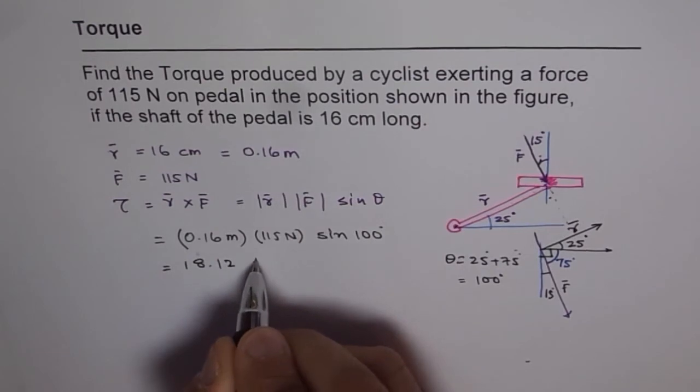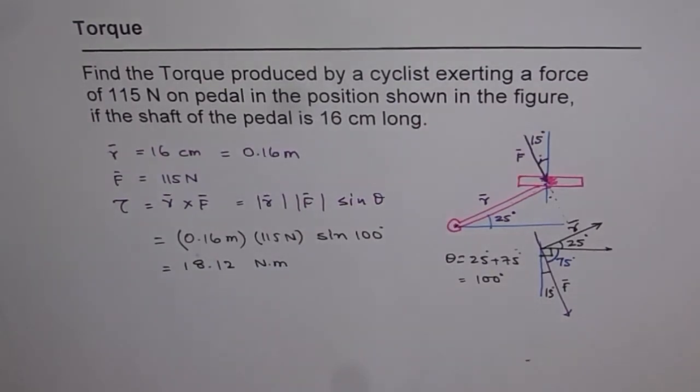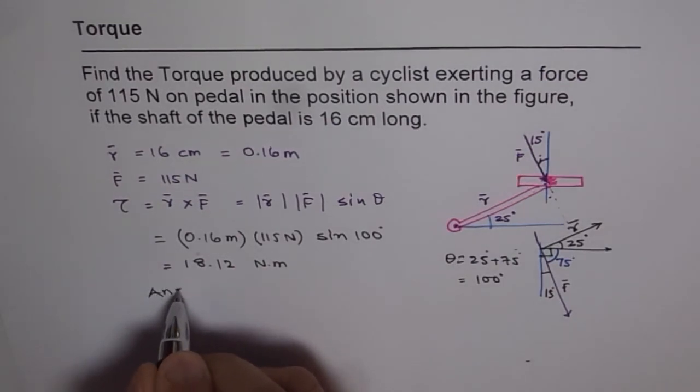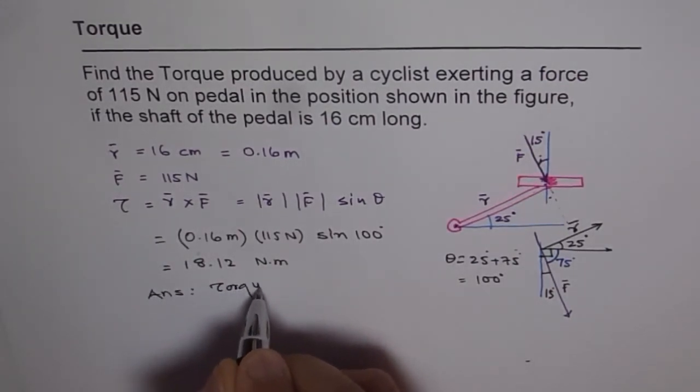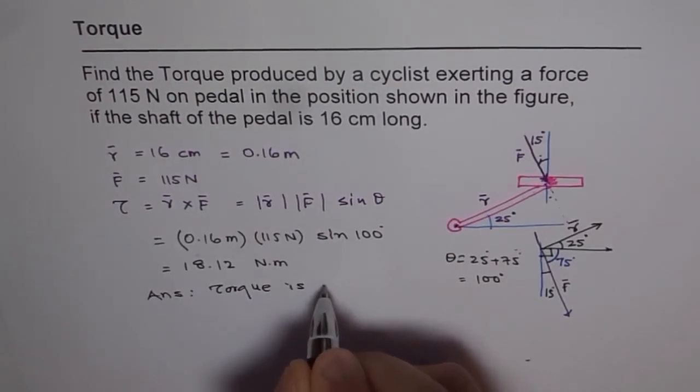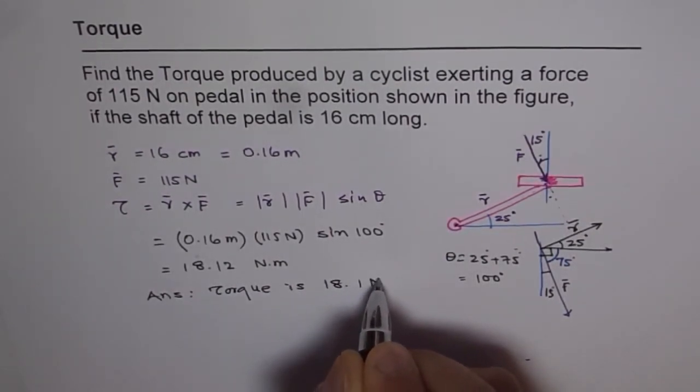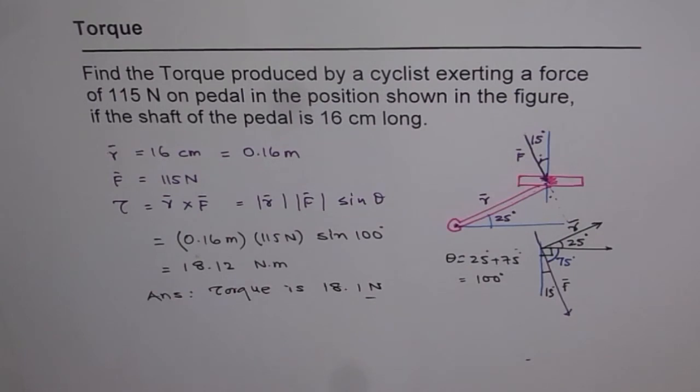18.12. And the units will be newton meter. So that is how you can give the force. So we can round it to one decimal place. And say torque is 18.1 newton meter. I hope that's absolutely clear to you. And with that I think you'll get good knowledge and information about torque. Thank you.